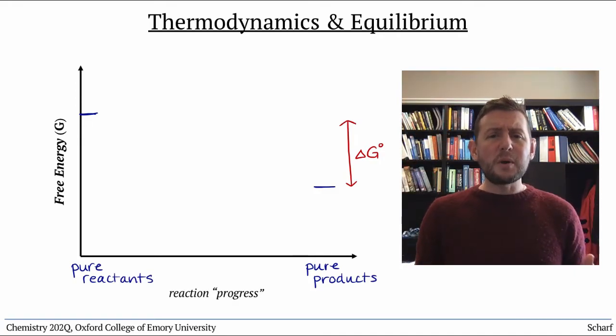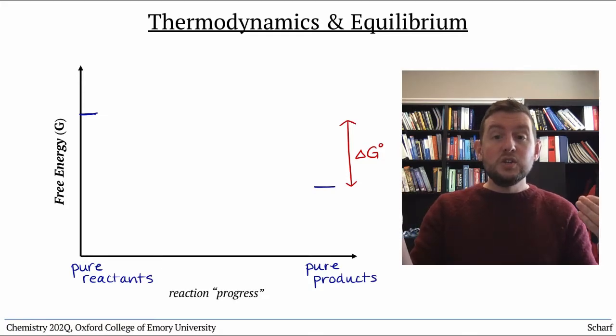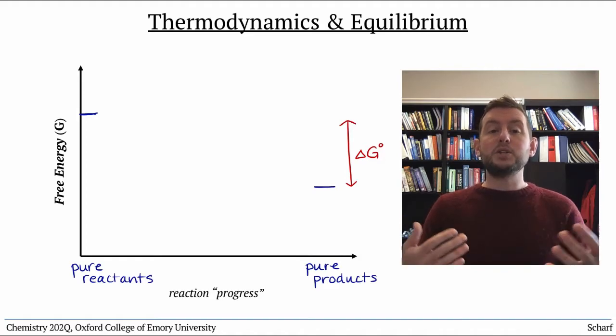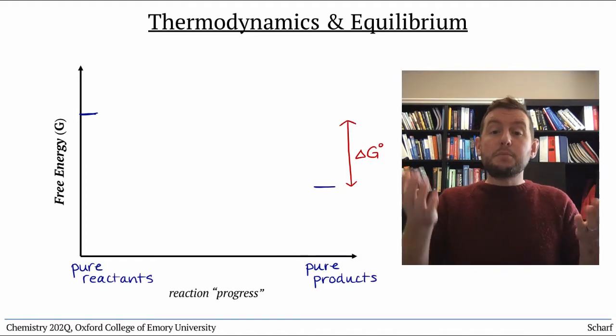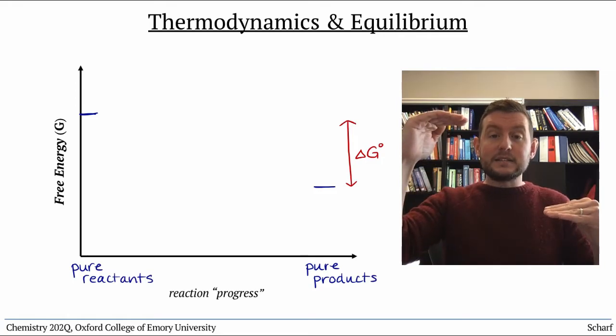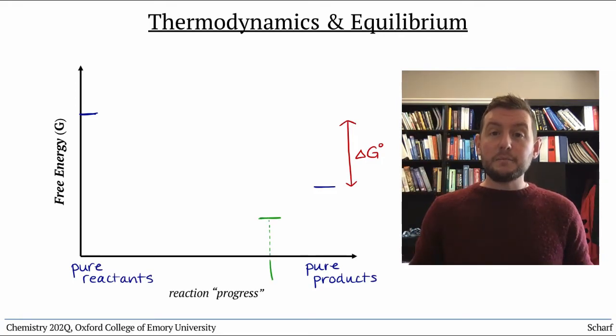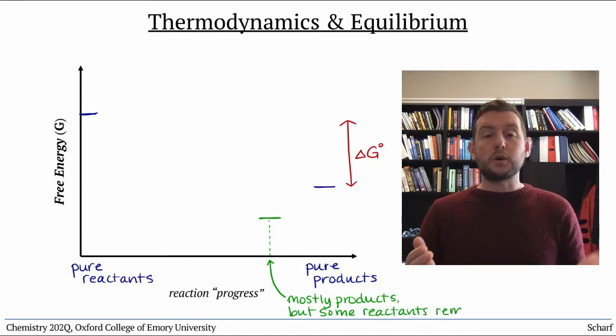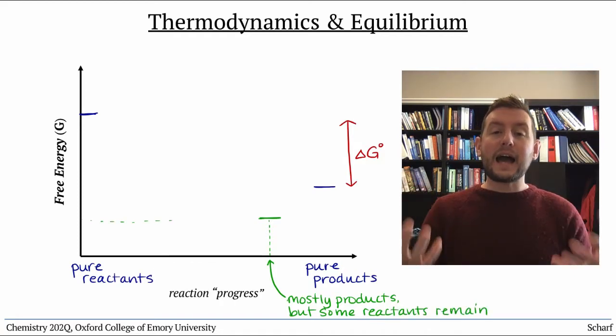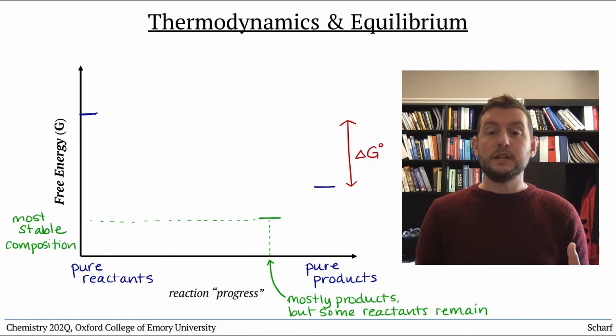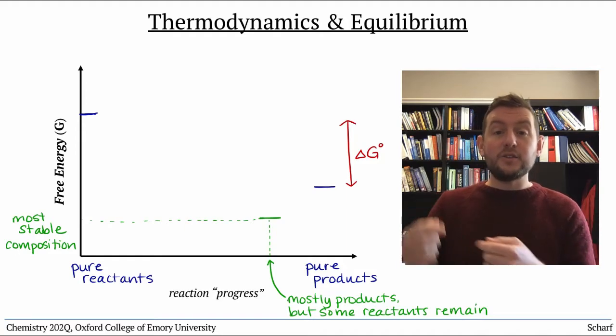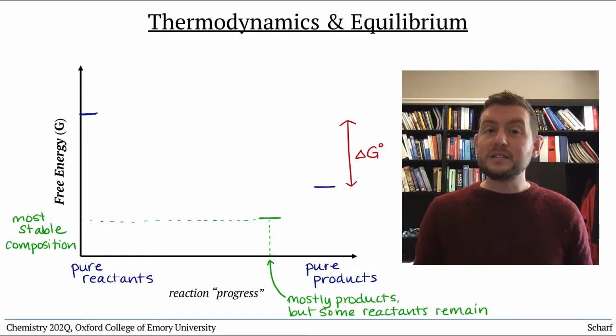But we know from our study of equilibria that most reactions don't go to 100% completion. That is, they establish some equilibrium balance between products and reactants, where there's some amount of everything present. That is, there's some intermediate place between pure reactants and pure products that's the actual most stable arrangement. And once the system reaches that point, moving either direction is non-spontaneous.